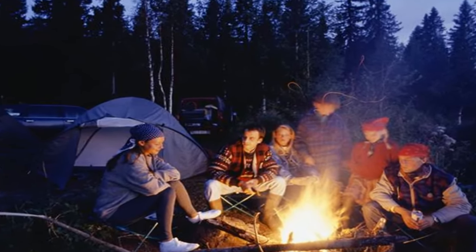In this example, heat is transferred from the burner to the pot and from the pot to the water touching it by conduction. Heated water at the bottom travels up, warming the cooler water above. Cooler water sinks to the bottom where it gets heated. This cycle repeats.